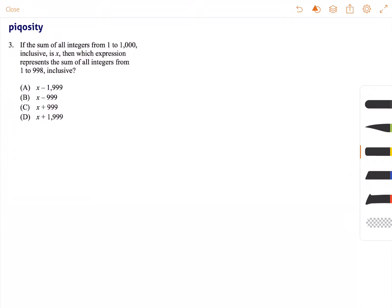This question reads, if the sum of all integers from 1 to 1,000, an integer is a positive or negative whole number including 0.